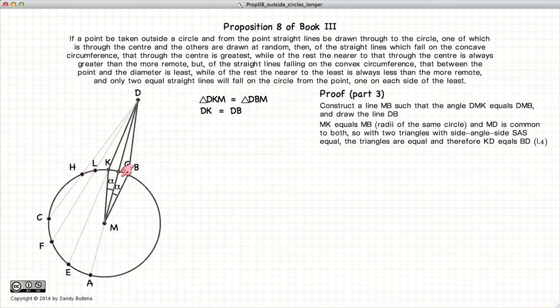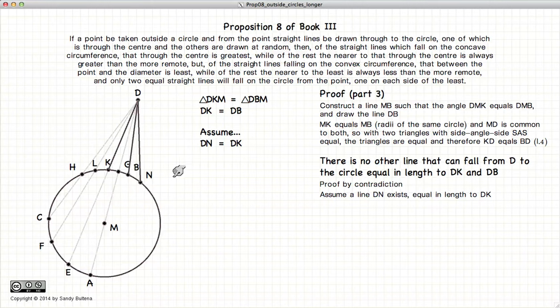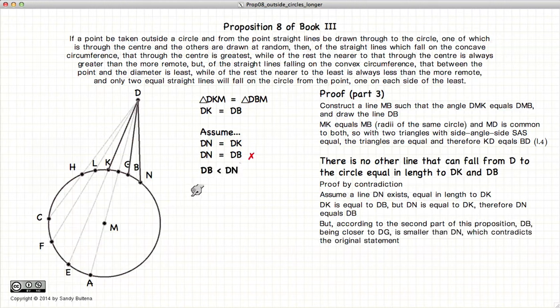So thus we have found another line that is equal to DK, and it is DB. But this proposition states that there is no other line from D to the circle that will be equal to DK. So we'll demonstrate that by contradiction again. So let's assume that DN is equal to DK. Well, DK equals DG equals DN. So we have that DN is also equal to DB. But in the prior portion of this proposition, we've already demonstrated that DB will be less than DN. And here we have our contradiction. These two cannot both be true.